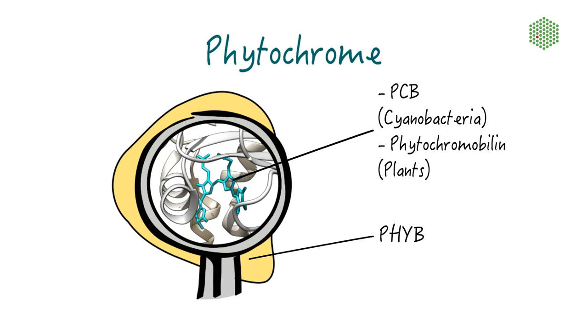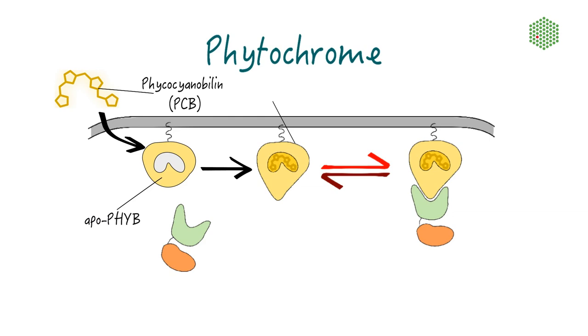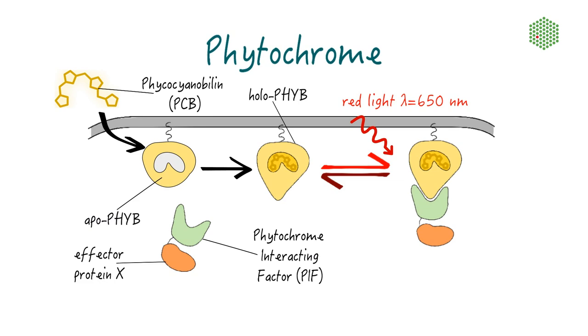Similarly to Cry2, PhiB forms a complex with a cofactor called PCB that is essential for its function. However, this cofactor is a compound only found in cyanobacteria and plant chloroplasts. Therefore, PCB needs to be delivered ectopically to turn the inactive ApoPhiB into the light-sensitive HoloPhiB. Only once PCB is autocatalytically ligated to PhiB will PhiB interact with PIF upon red light exposure.